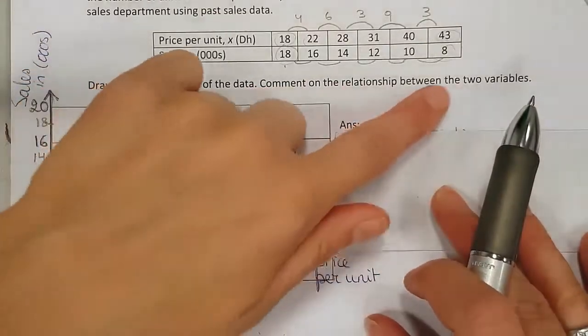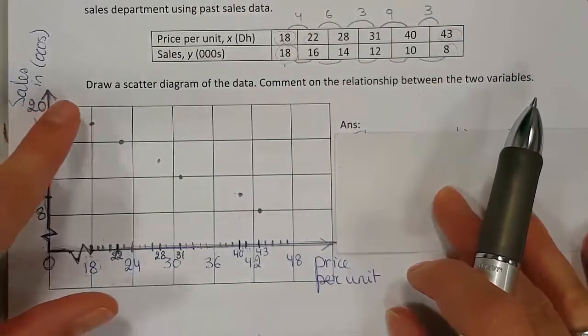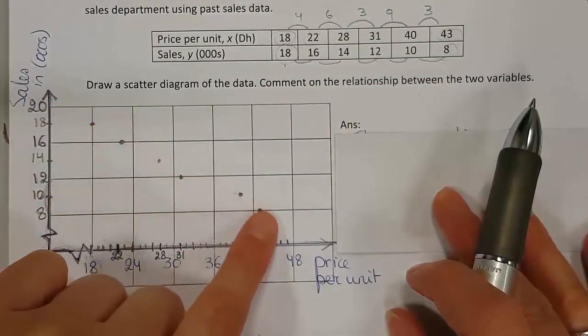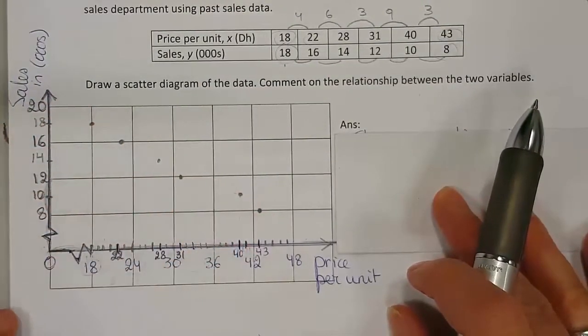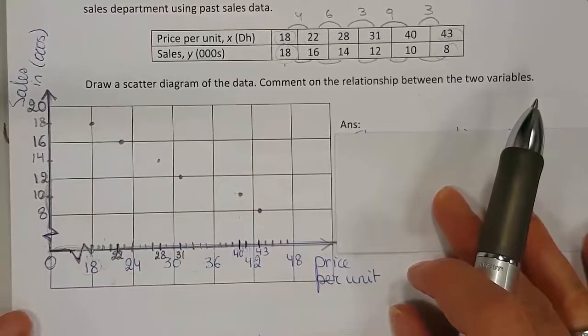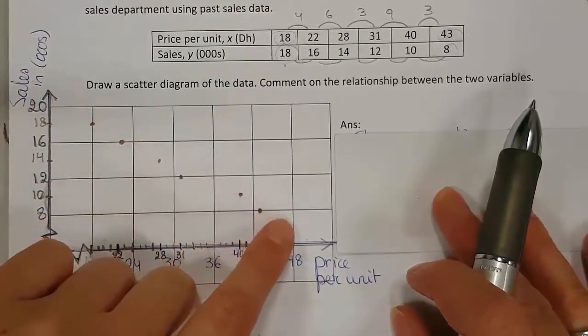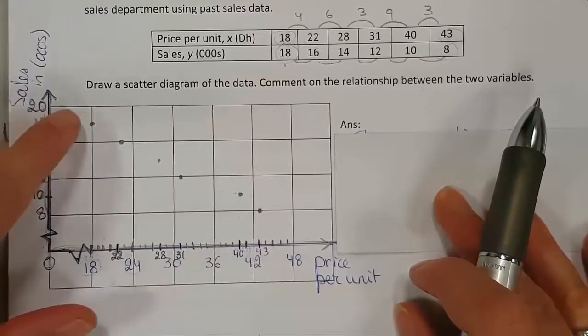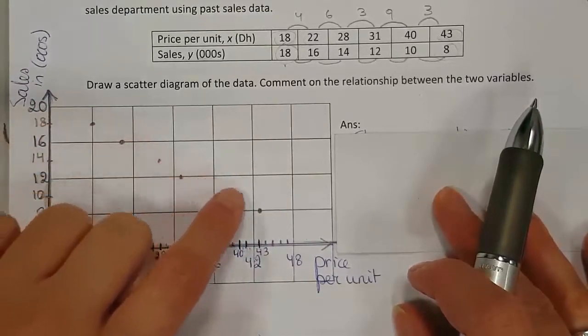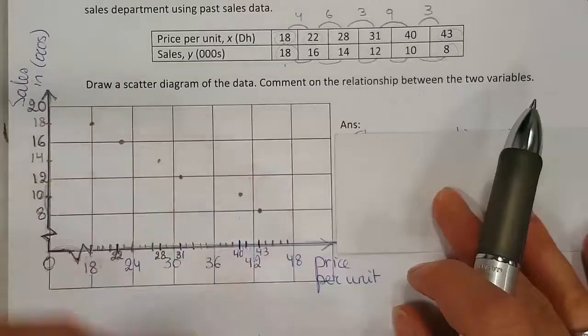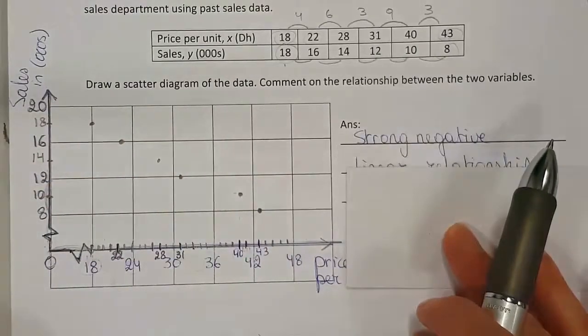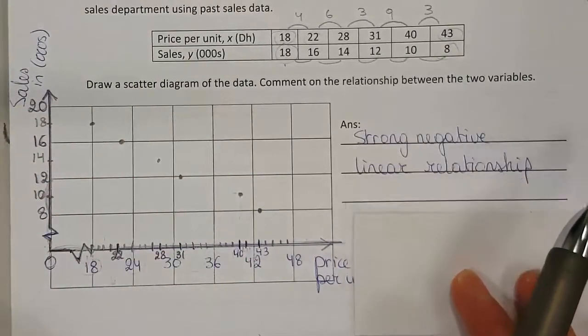Now comment on the relationship between the two variables. Notice that this is a negative linear correlation and we can say it's a strong negative linear correlation. Can you imagine the line running through here? The points are very close to that line.